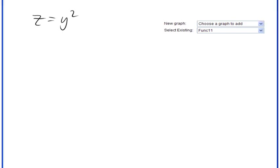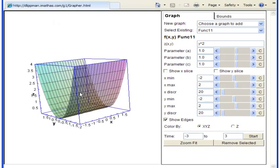So earlier, we looked at the graph of something like z equals y squared, which you might recall gave us a parabolic cylinder, which looks something like this.